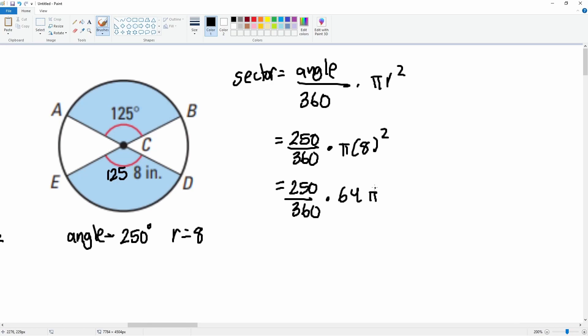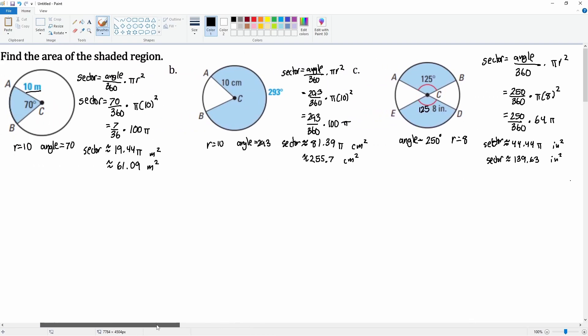I can now just enter that in: 250 divided by 360 times 64. That got me roughly 44.44 pi for the sector, or if I multiply it by pi I get the sector is approximately 139.63, and these are all inches squared.